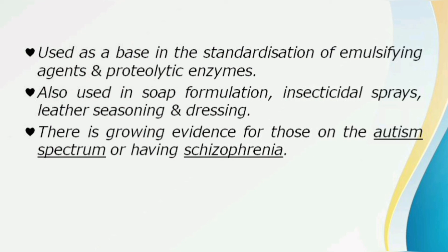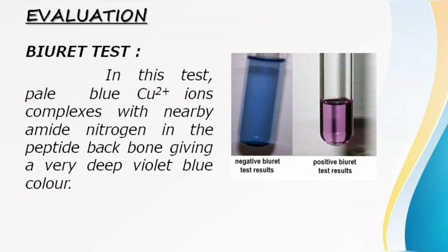Casein is also used in soap formulation, insecticides, cold sprays, leather tanning, gums, plastics, paint, and other protective coatings, as well as in emulsifying agent and proteolytic enzyme preparations. In autism or schizophrenia patients, there is a mild change in casein. A major evaluation test for casein is the biuret test — because it is a protein, it produces a pale blue copper ion complex with nitrogen, which turns a deep violet blue color.